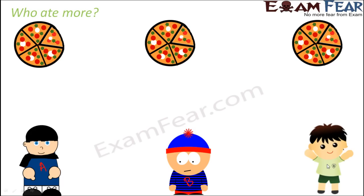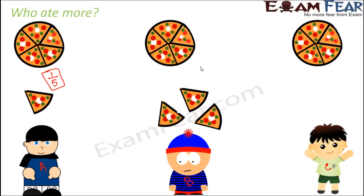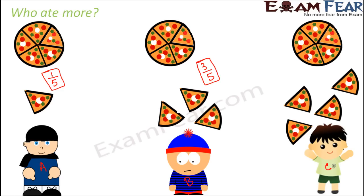So this is A, this is B, and this is C. Now all of them are hungry and they are each given one complete pizza. Based on their hunger and appetite, each of them ate different quantities. The pizza given to each was divided into five equal slices. A ate one slice out of five — that is one-fifth of the pizza. B ate three slices out of five — that is three-fifths. And C ate four slices out of five — that is four-fifths of the pizza.